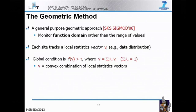This work was done by some partners in the project around SIGMOD 2006. The basic idea is to be completely agnostic about the function being monitored. Rather than monitoring the range of the function, we monitor the domain — the streaming vectors where the function is defined. Each site tracks a local statistics vector, a dynamic local frequency distribution. The global statistics vector is defined as a convex combination of the local statistics vectors — essentially a vector average.